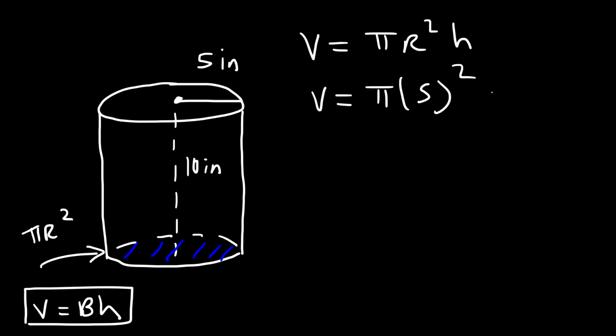5 squared is 25, and 25 times 10 is 250. So the volume for this cylinder is 250 pi cubic inches. That is the answer.